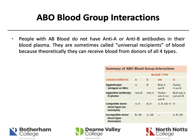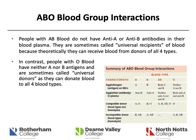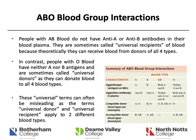Looking at interactions between blood groups: people with AB blood do not have anti-A or anti-B antibodies in their plasma, and are sometimes called universal recipients because theoretically they can receive blood from donors of all four types. People with O blood have neither A nor B antigens and are sometimes called universal donors, able to donate to all four blood types. However, these terms can be misleading and confusing, as they pertain to specific blood group interactions. If somebody receives an incompatible blood type, it can cause a transfusion reaction which can be severe and potentially life-threatening.